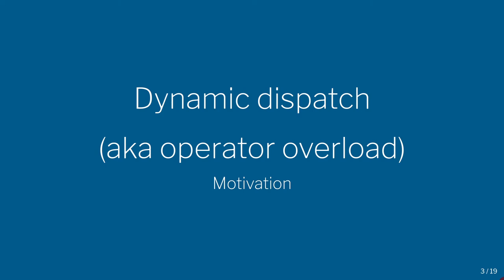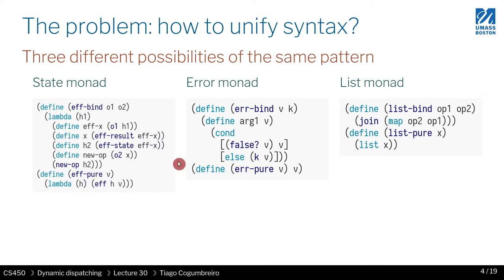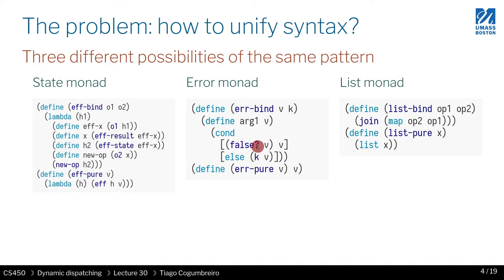Today I want to introduce the idea of dynamic dispatching, also known as operator overloading. The idea is that you have the same operation being used for multiple purposes. For instance, we saw how bind could be defined for effectful operations, for the state monad, the error monad with false, and also for the list monad where we had a join operator used with map. These are three alternative implementations of the same idea of binding.